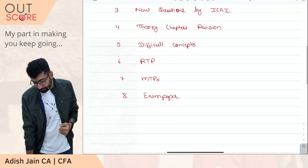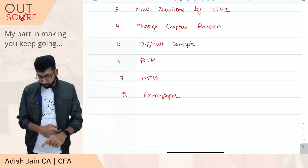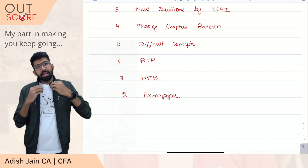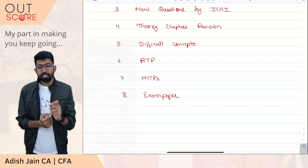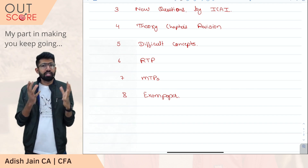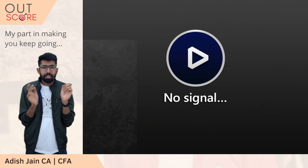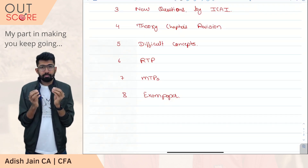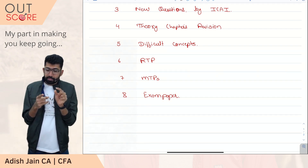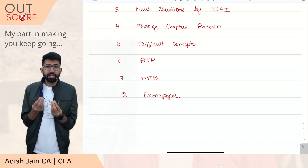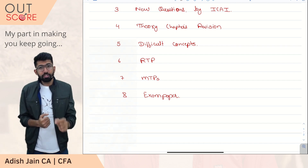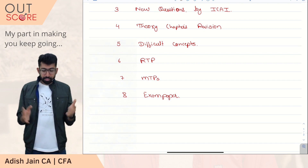Third — new questions by ICAI. This point is relevant not just for my students but for any SFM student appearing for May 2022. You may have taken your classes about one to two years back. Since then, four attempts have passed, with four question papers, four RTPs, approximately six to eight mock test papers — for both old and new course — so a large number of papers have been released by ICAI. In these papers, a lot of new questions with new concepts have been asked.